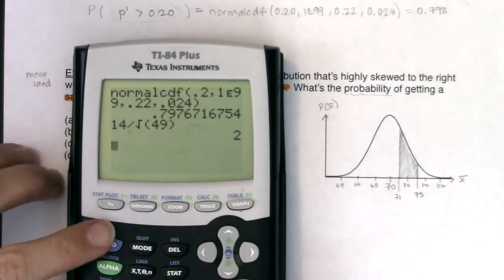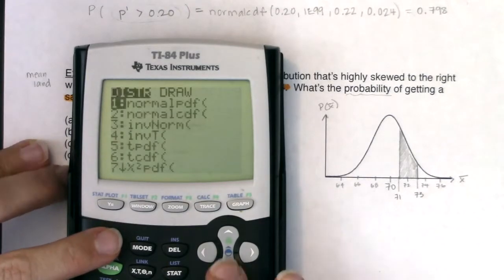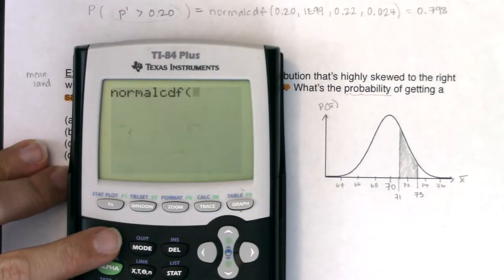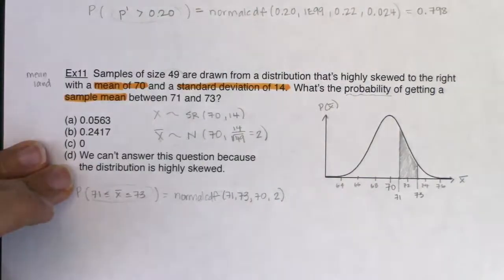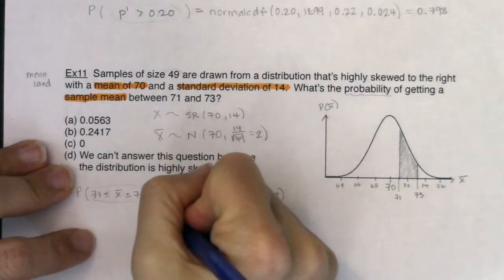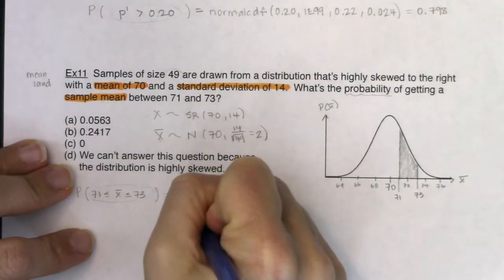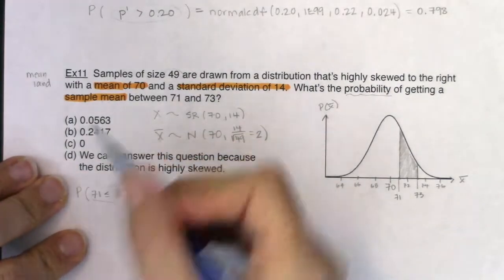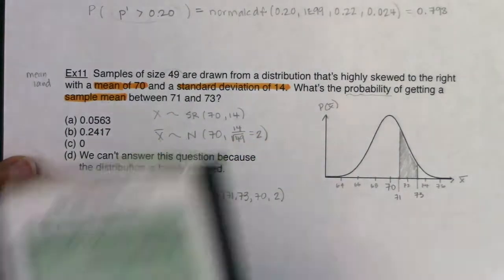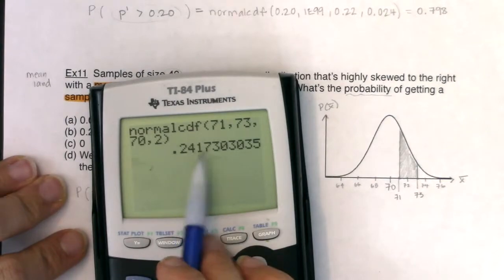Let's see what we get. Let me clear this out. Normal CDF, 71, 73. Centered at 70. Standard deviation at 2. I'm looking at 24%. So we've got about 24. And if I'm looking, was it 0.17? Let's see. I didn't grab it. 0.2417.